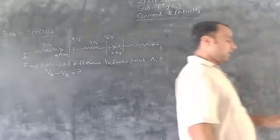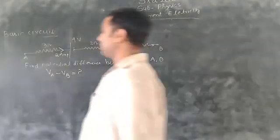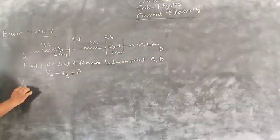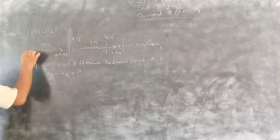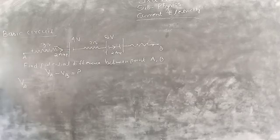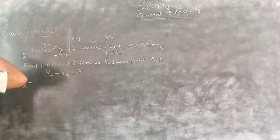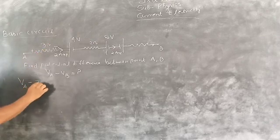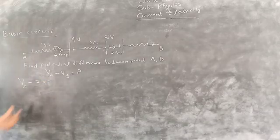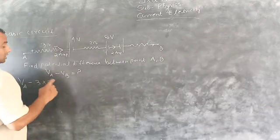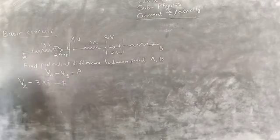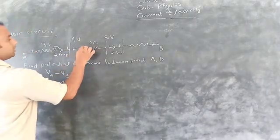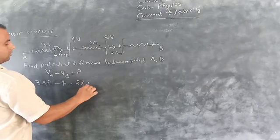We are starting from one point. Suppose we are starting from point A and write the potential of point A. The potential difference — current is flowing in this direction. This terminal will be positive because current always flows from higher potential to lower potential. After the sign, we include minus 3 ohms resistor and 2 ampere current — that is current into resistance, giving the resistor voltage. The battery has a plus-minus sign, and the voltage is minus 4.